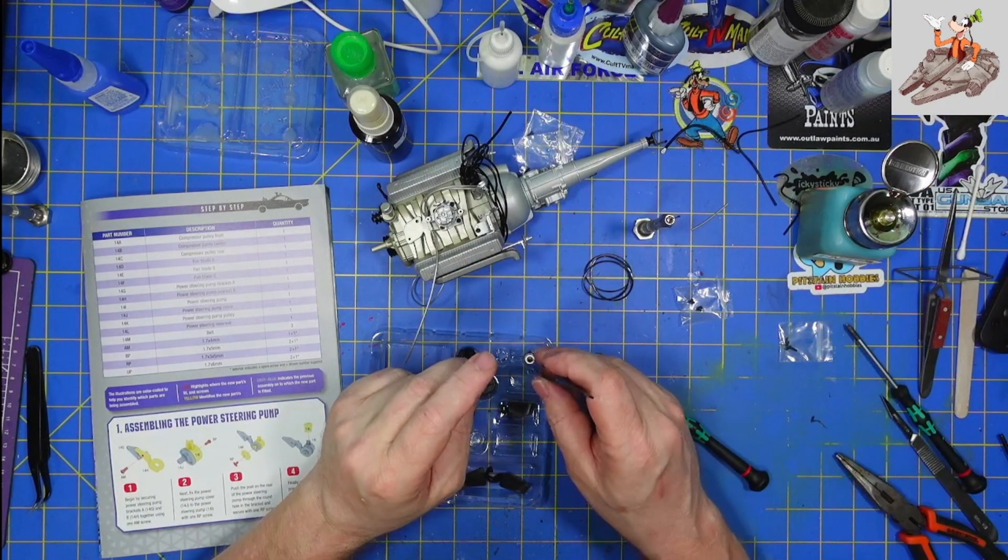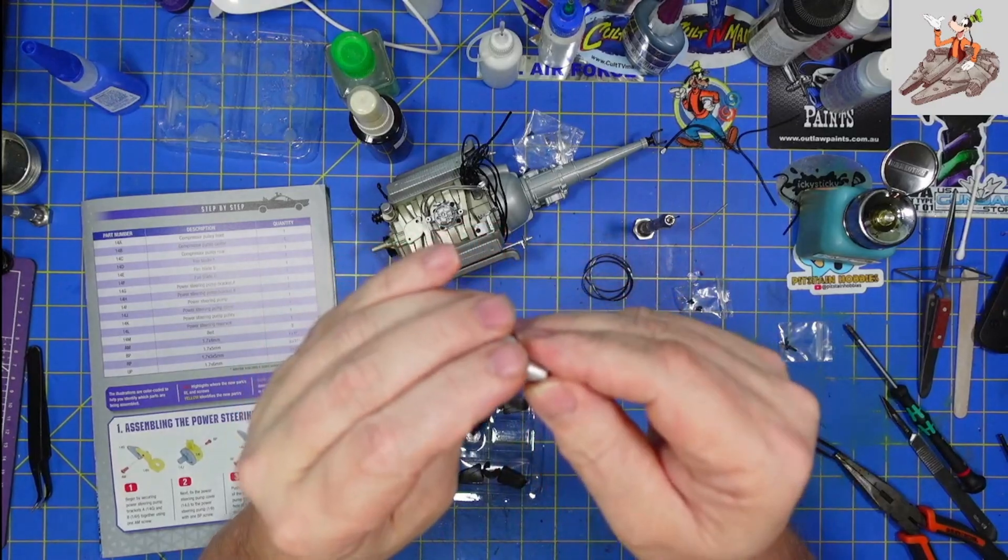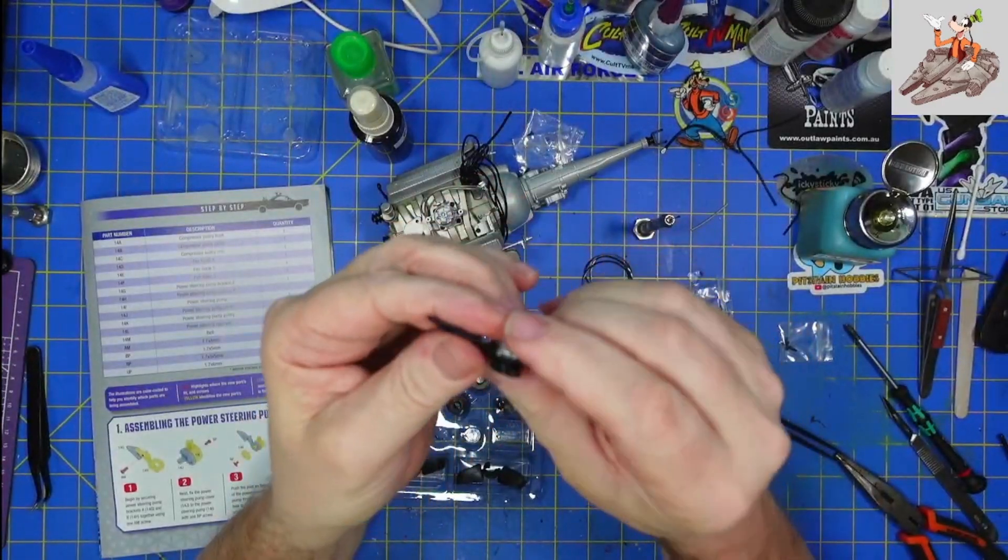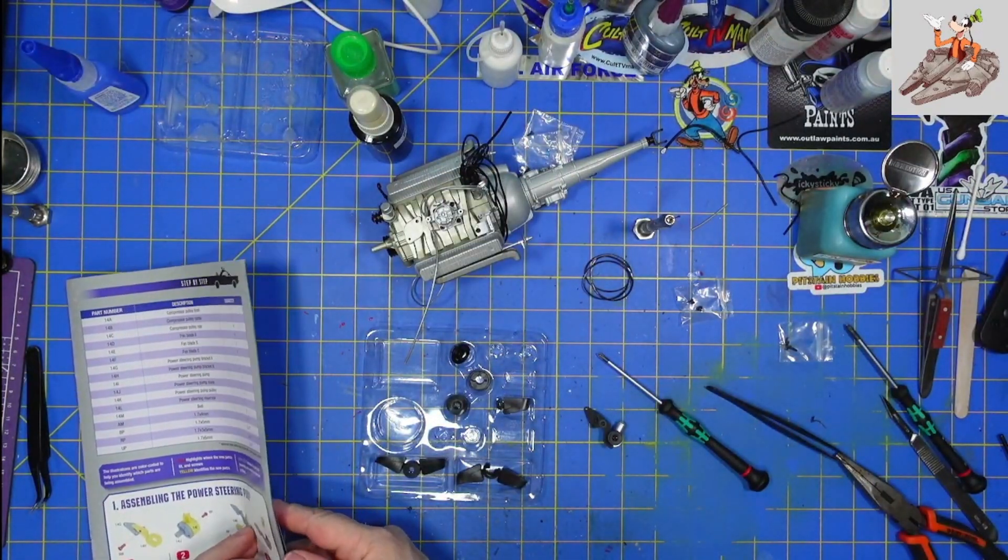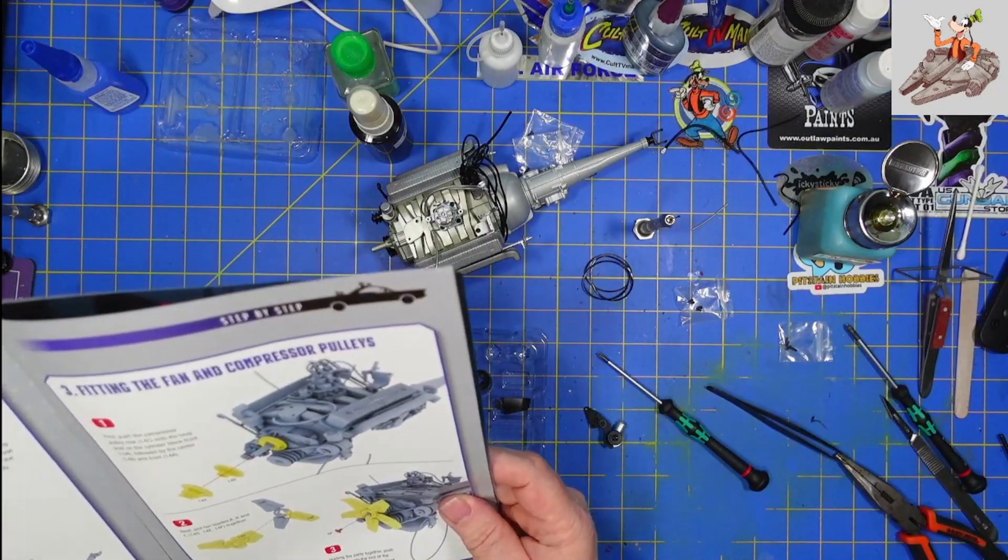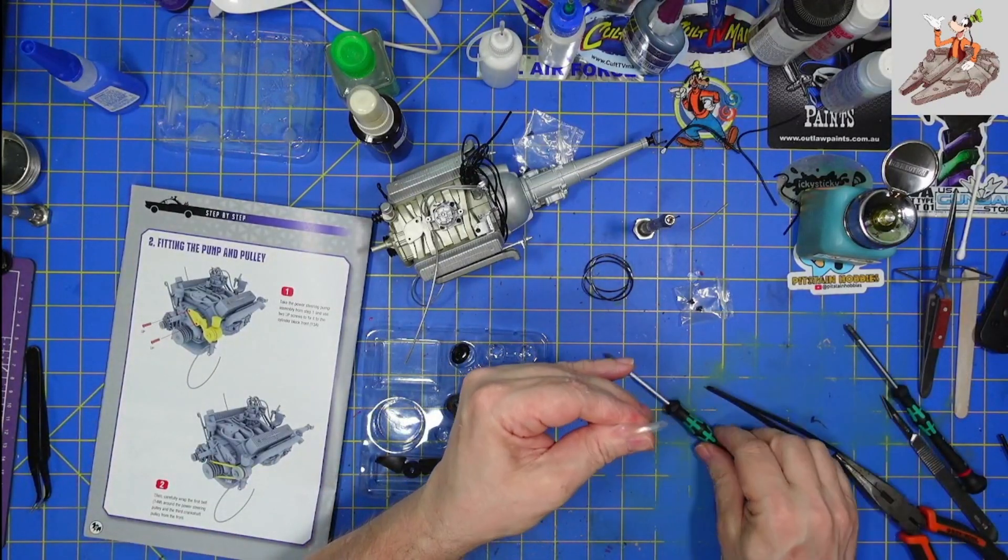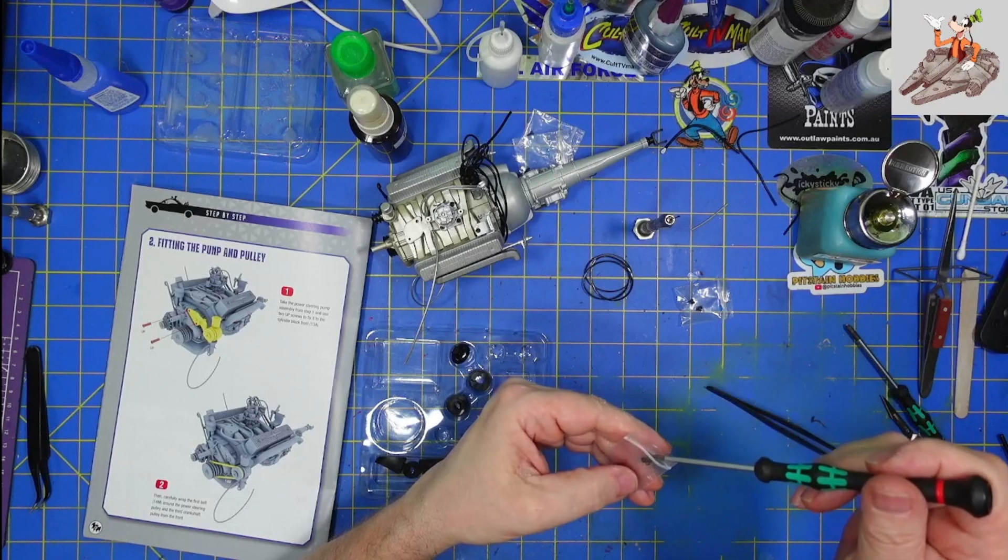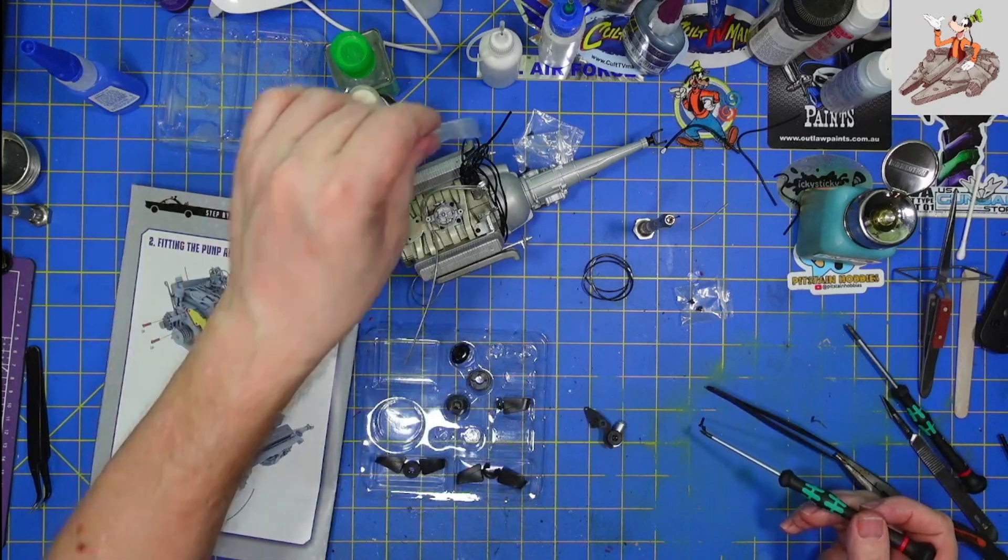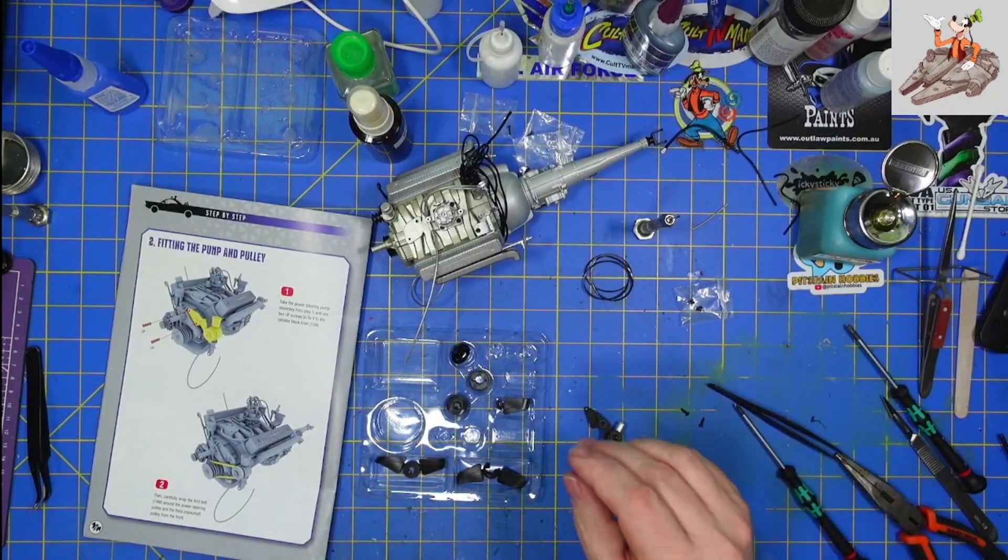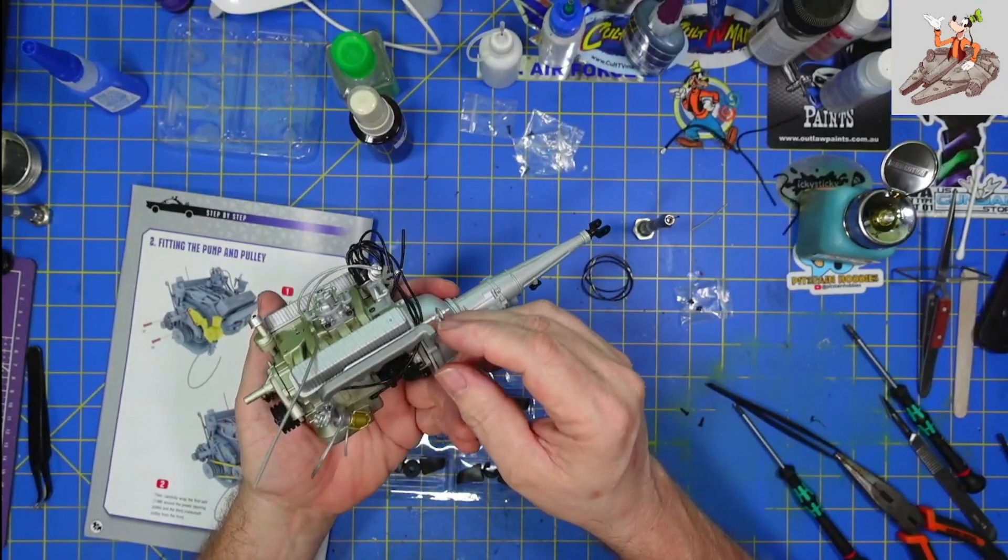We're going to take 14L, which should be this silver cap here. That is the power steering reservoir fill. And so it's going to go on there like that. We're going to turn the page. We're going to find that we have two UP screws here. Going into plastic. UP screws are going to hold this on. Did I just knock that loose? No.